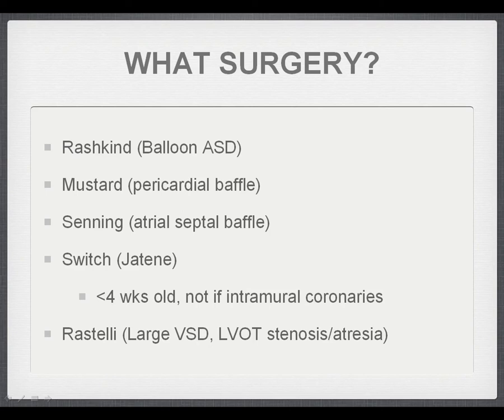Since its introduction in 1982, the arterial switch procedure — the Jatene procedure — has become the standard for almost all cases of transposition. The older procedures such as Mustard or Senning are still used if the patient isn't suitable for the arterial switch, for example due to intramural coronaries or late presentation beyond four weeks of age, since the arterial switch doesn't work well when the left ventricle has been exposed to low pulmonary venous pressures for a prolonged period. The Rastelli procedure — less common than the Jatene — involves a conduit between the right ventricle and the pulmonary trunk or arteries to bypass left ventricular outflow tract stenosis or atresia.